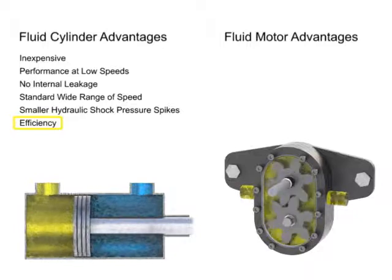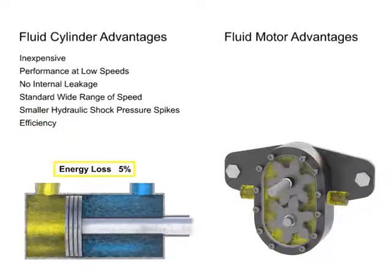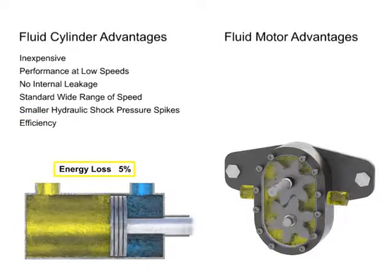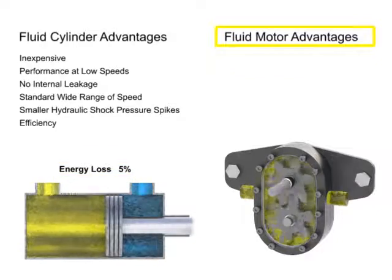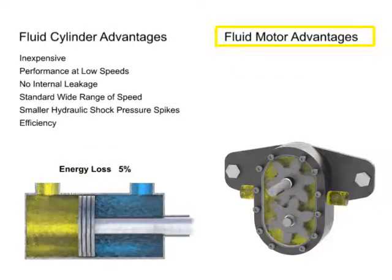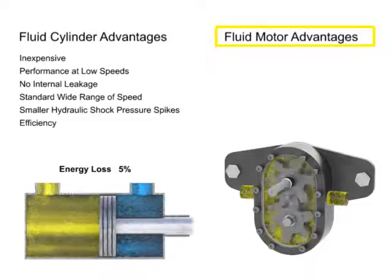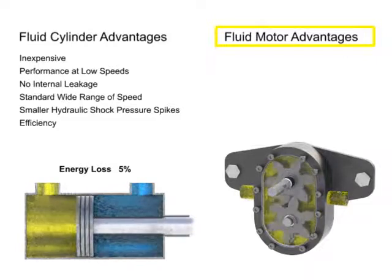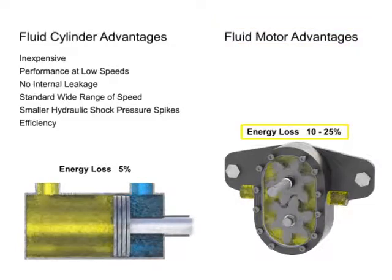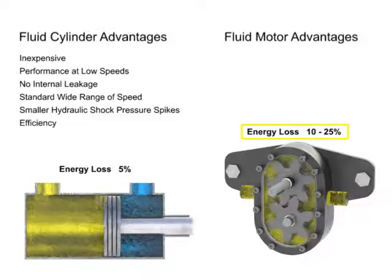Energy loss can be held to about 5% in a well-constructed cylinder. But fluid motors, or pumps, experience power losses from fluid leakage and friction within the device. These losses can be anywhere from 10% to 25% of the input power.